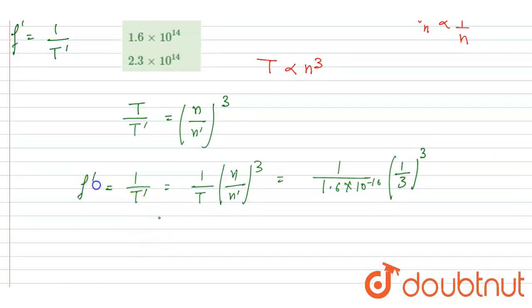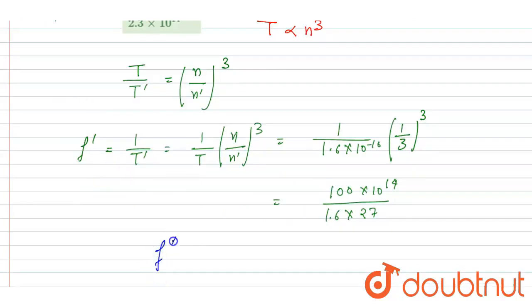This will be the change frequency. Now you can get it by, if you calculate it, this is 27. And this is 1.6, so I will write it is 10 to the power 16. So we can write down 100 into 10 to the power 14 into 27. Now you can calculate it.